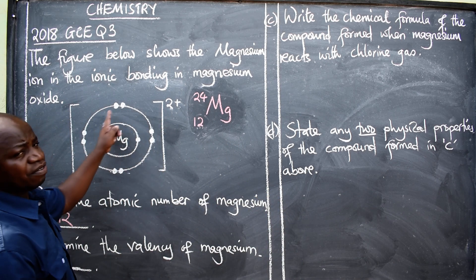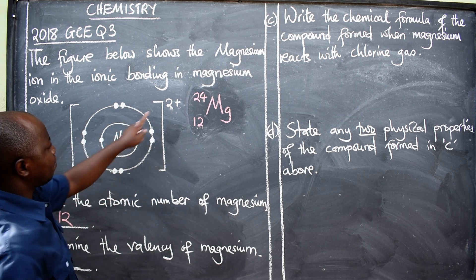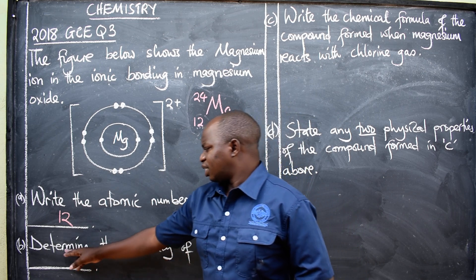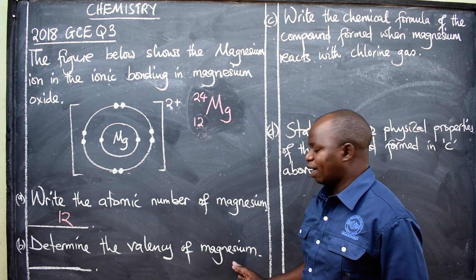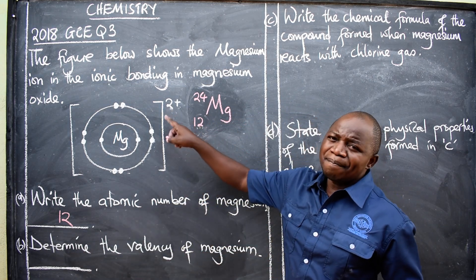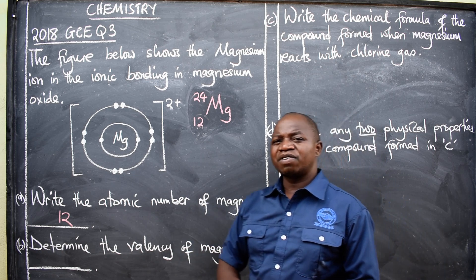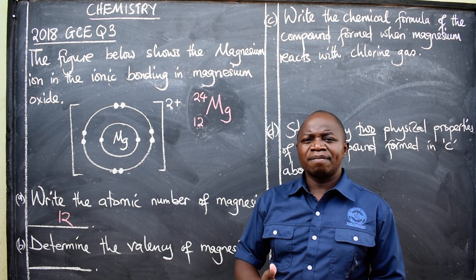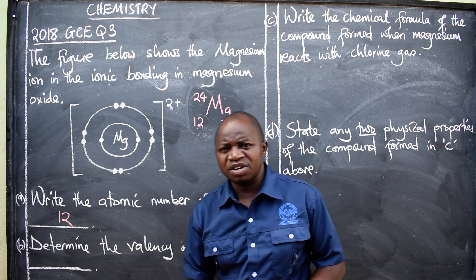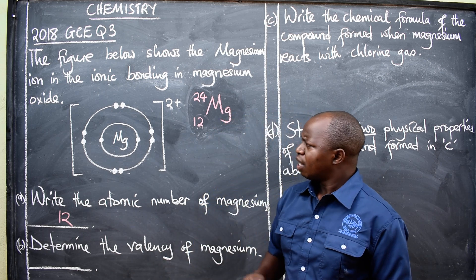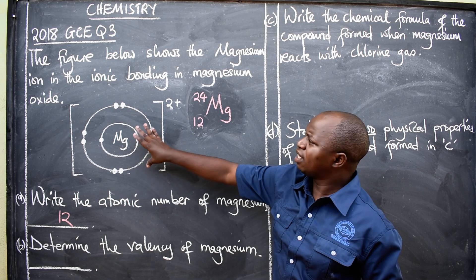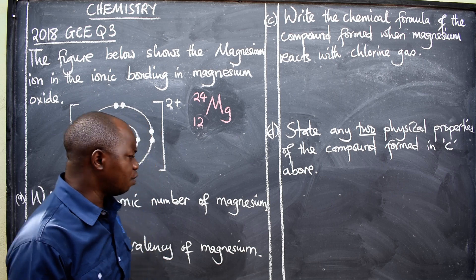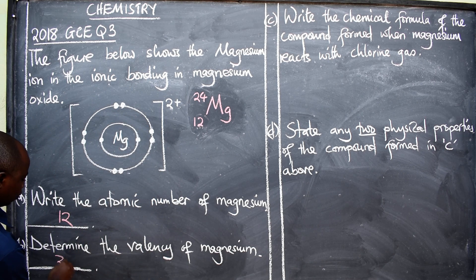You can get the answer from the diagram — 10 plus 2 gives you 12. Now for Part B, valence means the number of electrons that a metal or element will be able to gain or lose in order for it to be stable. In this case, magnesium should be able to lose 2 electrons, and that is the valence. So the valence of magnesium is 2.